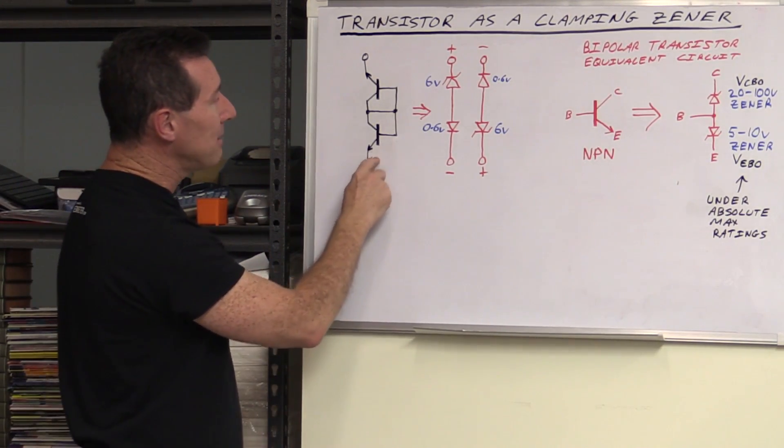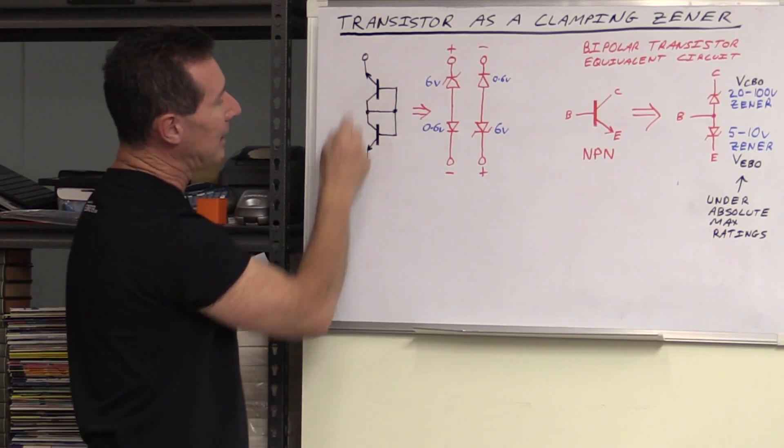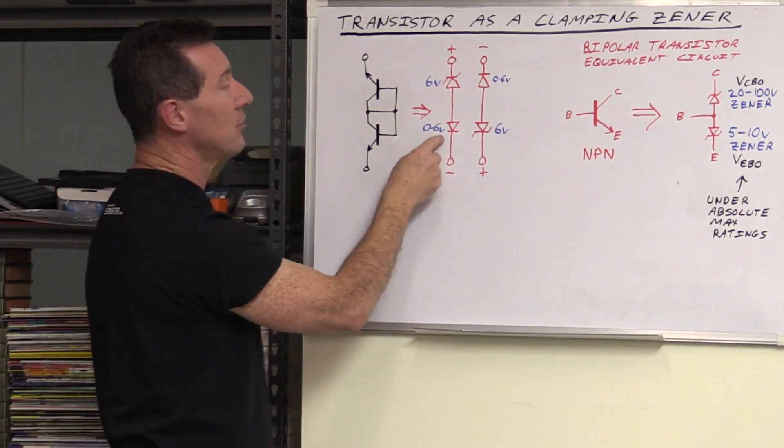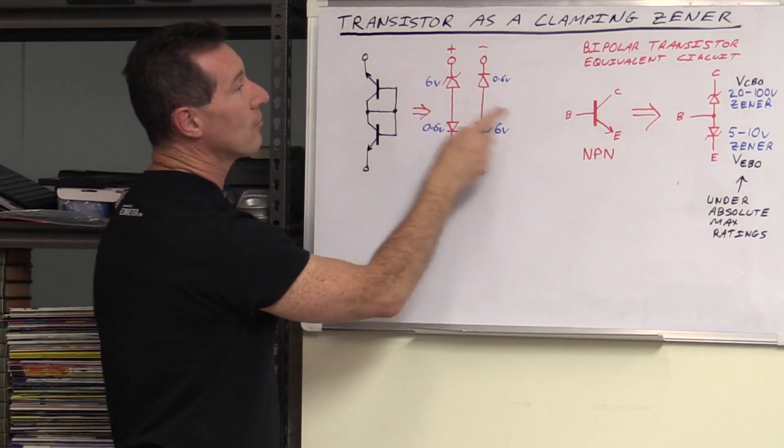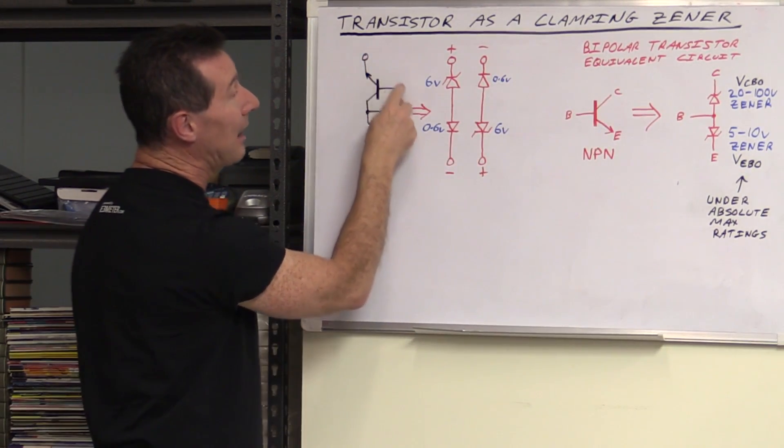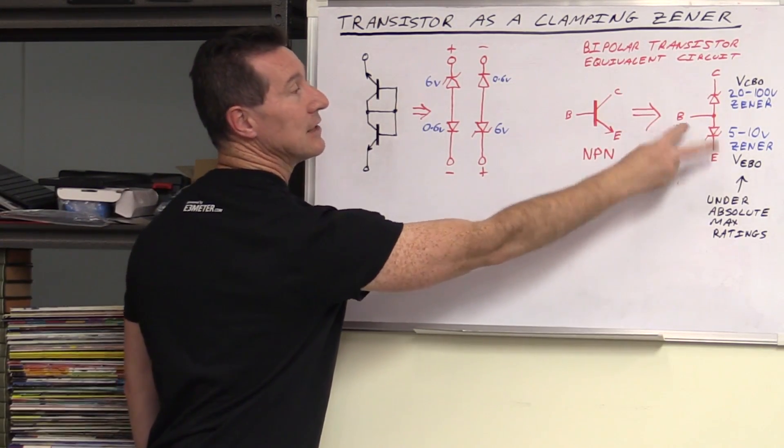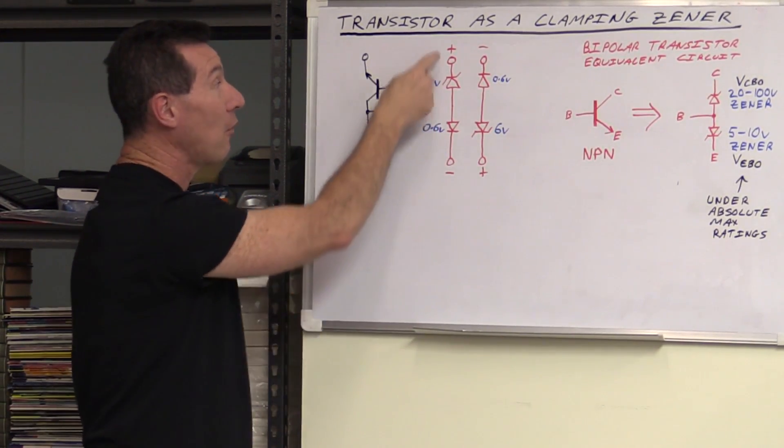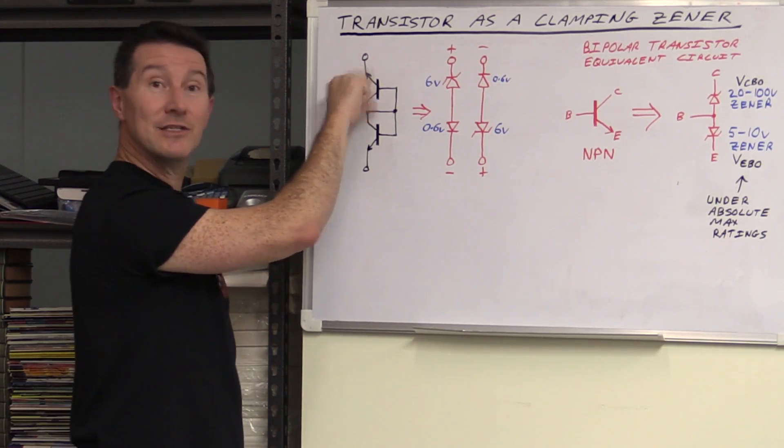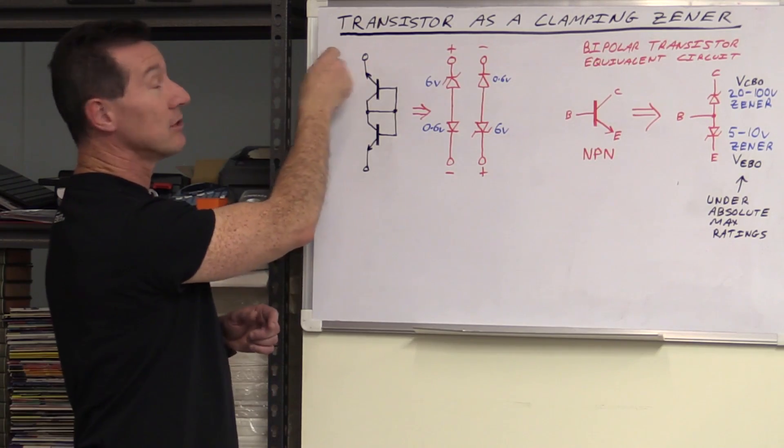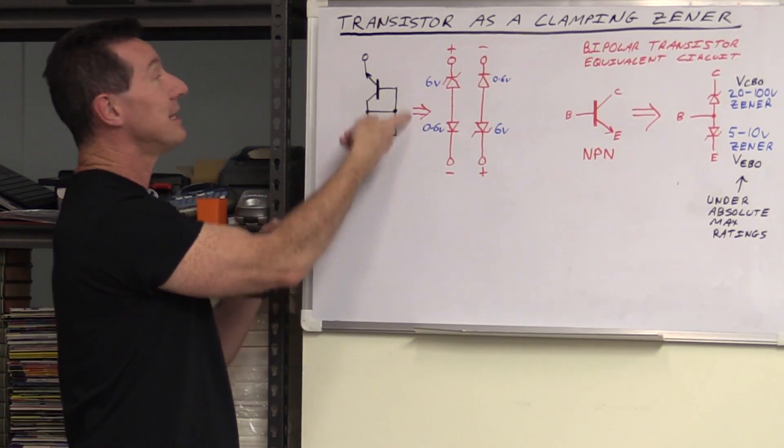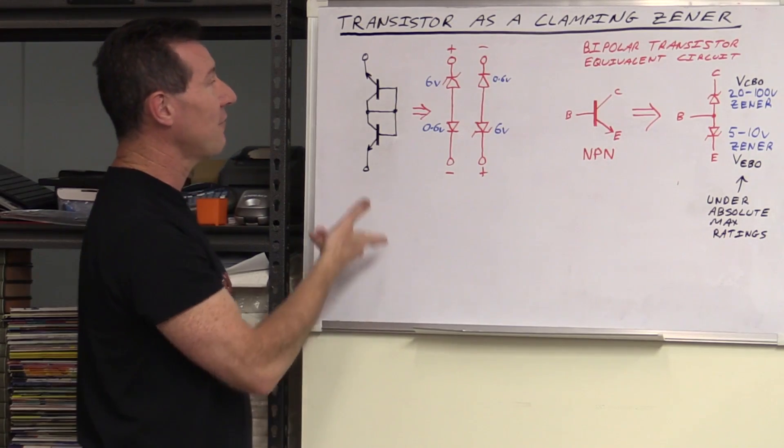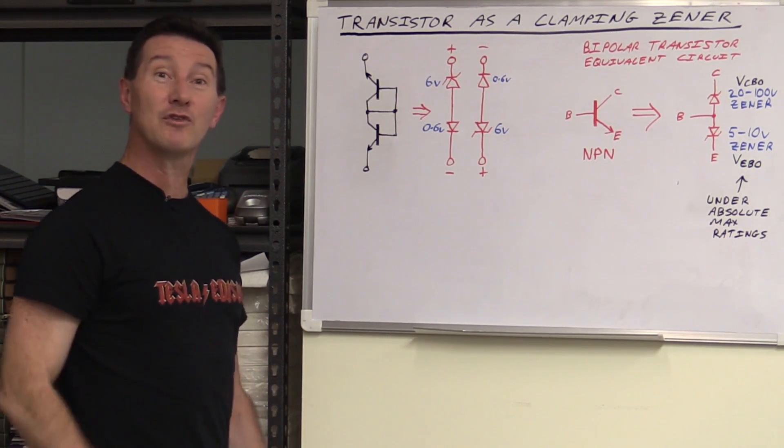How does this work? Well, your base emitter junction, if you've got a positive voltage here and a negative voltage here, base emitter is just your diode drop, 0.6 volts. Then, because we're actually using base emitter base in reverse, it's acting like a Zener to give us roughly a 6 volt drop. So, anything over 6.6 volts here will cause this to conduct and clamp. And likewise, in the other direction, bi-directional, it'll clamp at plus minus 6.6 volts.